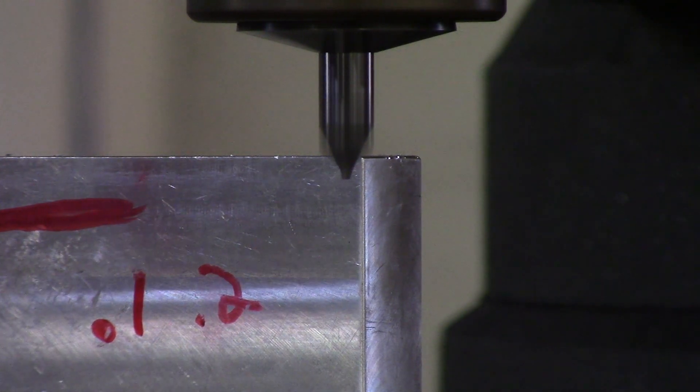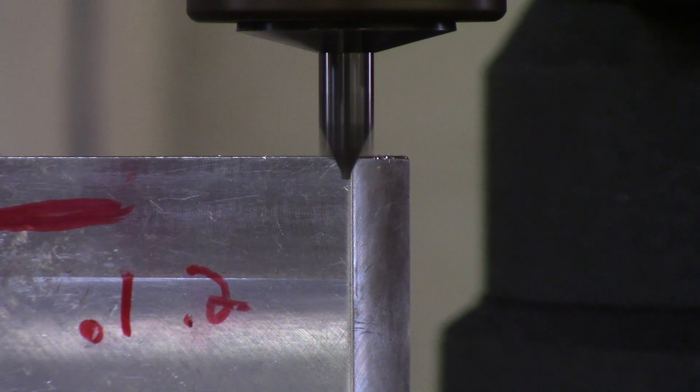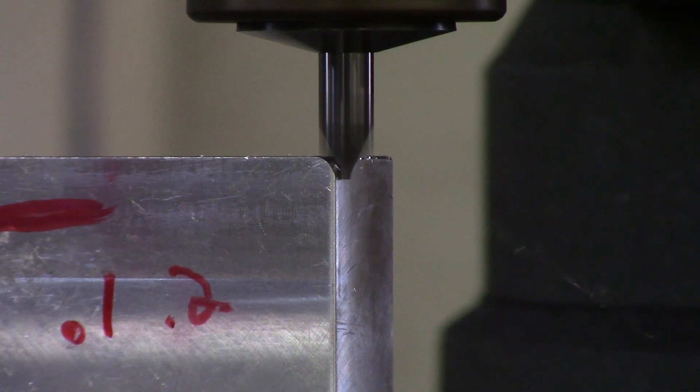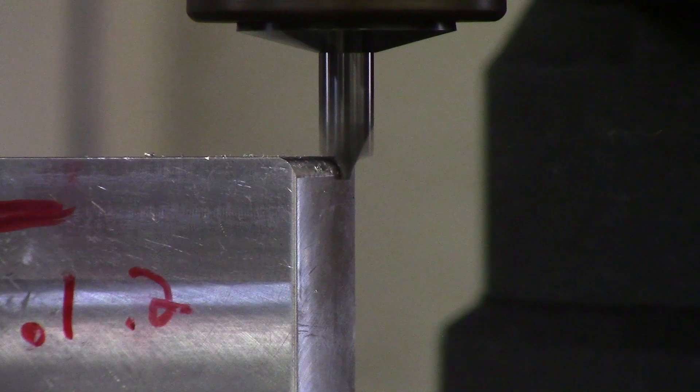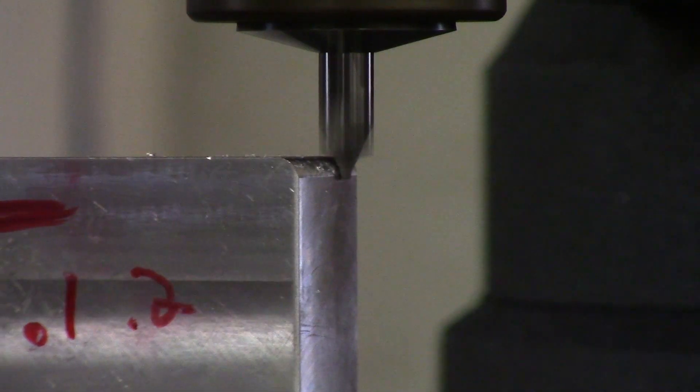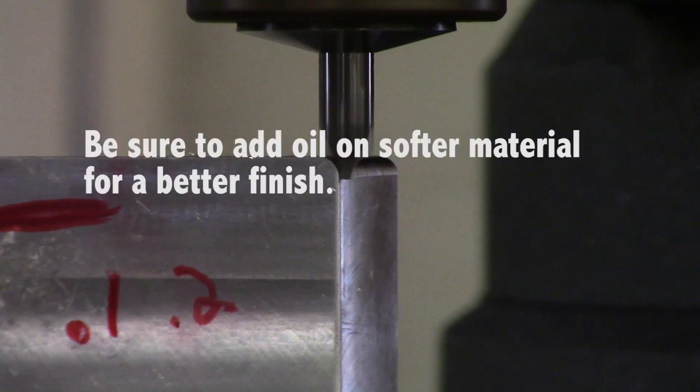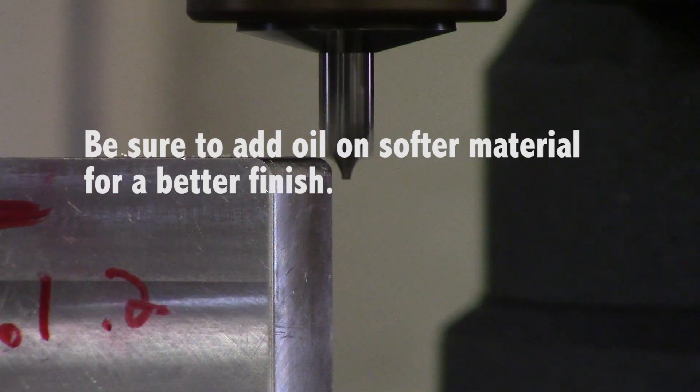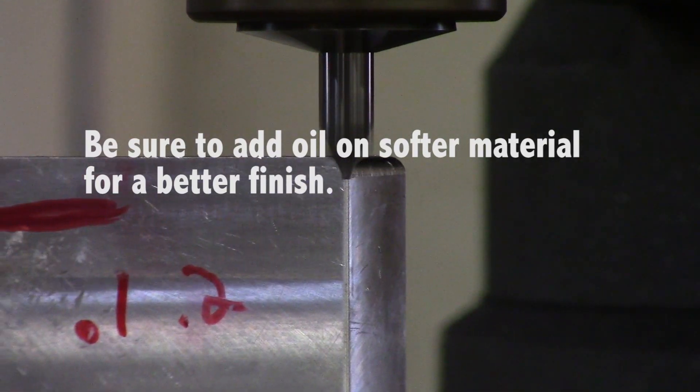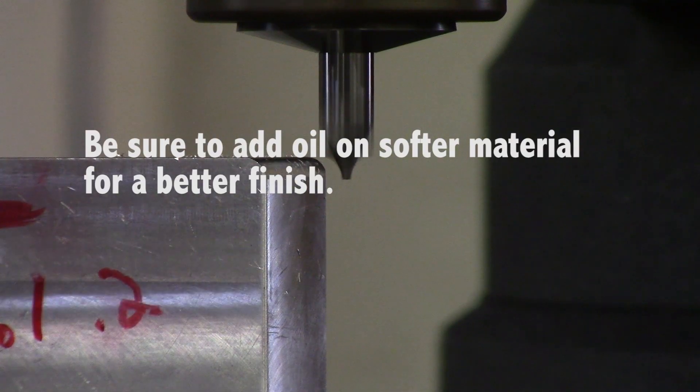Now that we're at our zero, we're just going to cut across our radius. You can take a few passes to make sure to get all the extra material out of the way.